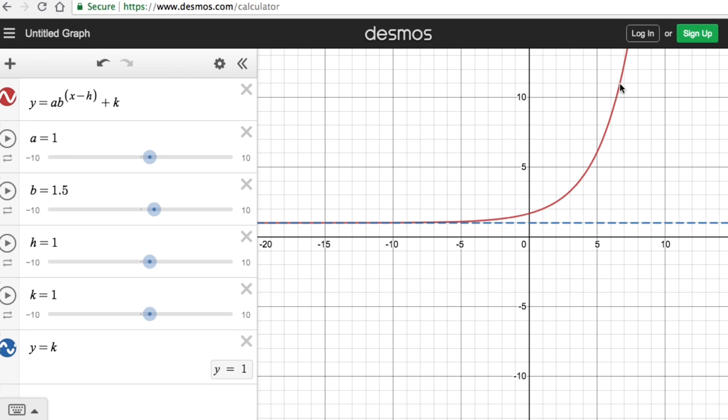So for example, in this graph right here, which is an exponential graph, it approaches this blue line, which is our asymptote, but it will never touch it. Although in this picture it looks like it's touching it, it gets closer and closer but will never touch it.